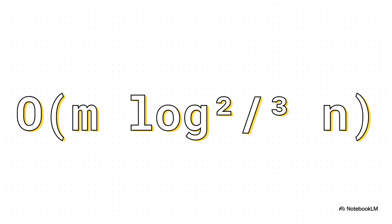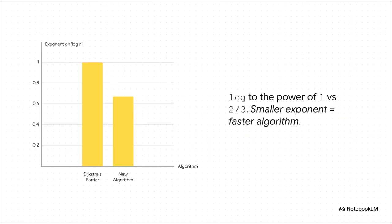This is the time complexity of their new algorithm. And I know it looks like alphabet soup, but let's unpack it, because all the magic is hiding right here. Put simply, M is the number of connections in the network, and N is the number of points. So what makes this faster? Well, the secret sauce is that little number on the logarithm. In Dijkstra's, the speed is tied to log N, which you can think of as log to the power of 1. As you can see on the slide, the new algorithm has log to the power of 2 thirds. And since 2 thirds is less than 1, it means as the network gets bigger and more complex, the new algorithm's runtime just grows more slowly. It is fundamentally, provably faster.